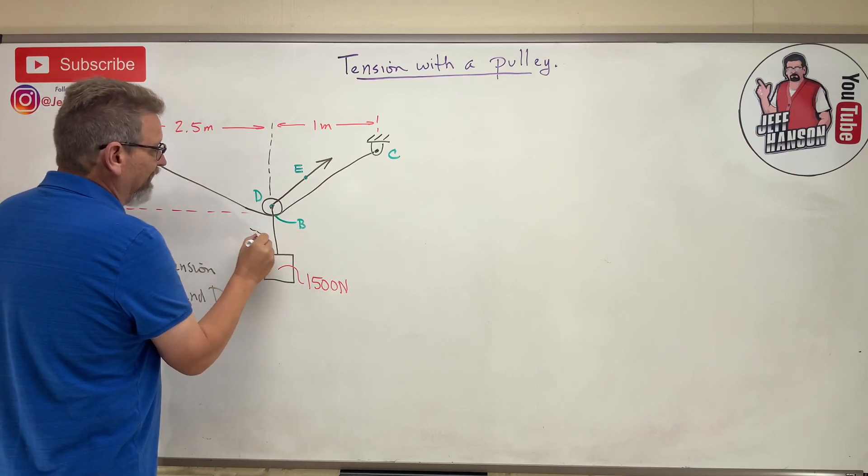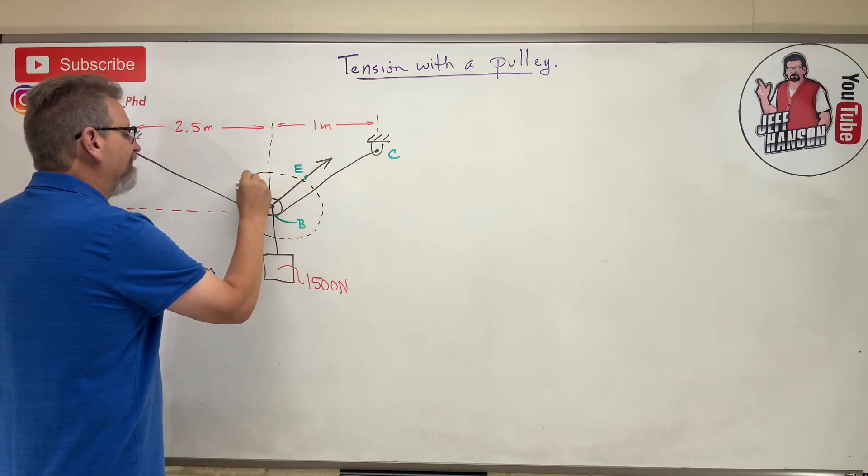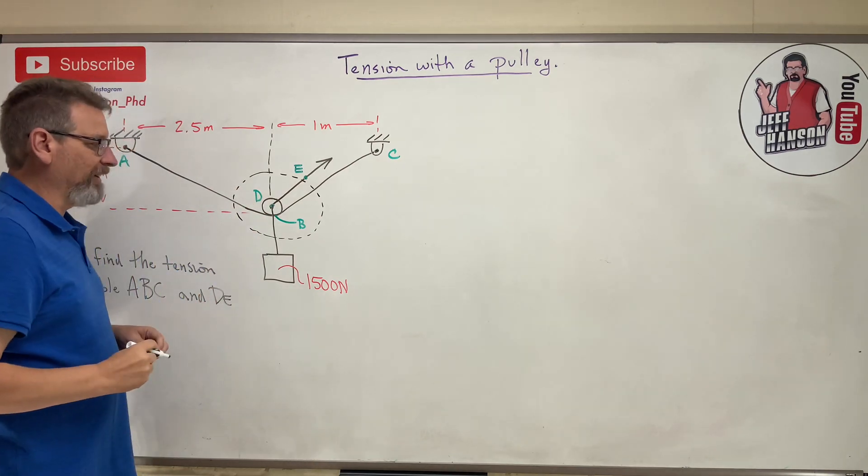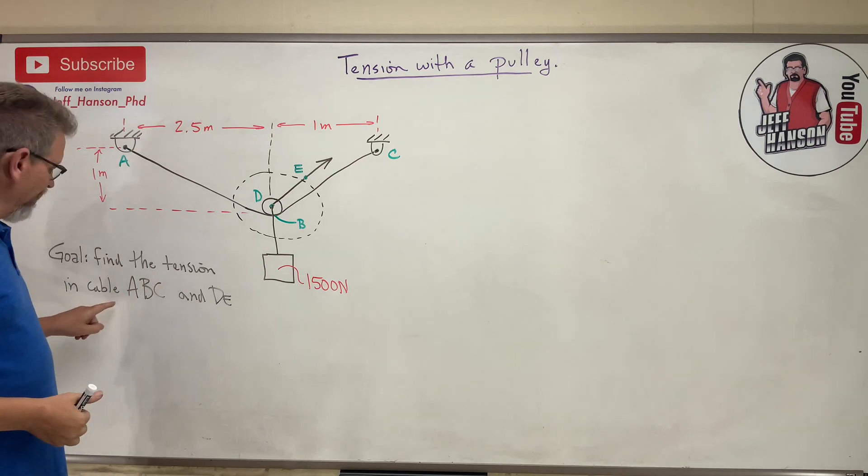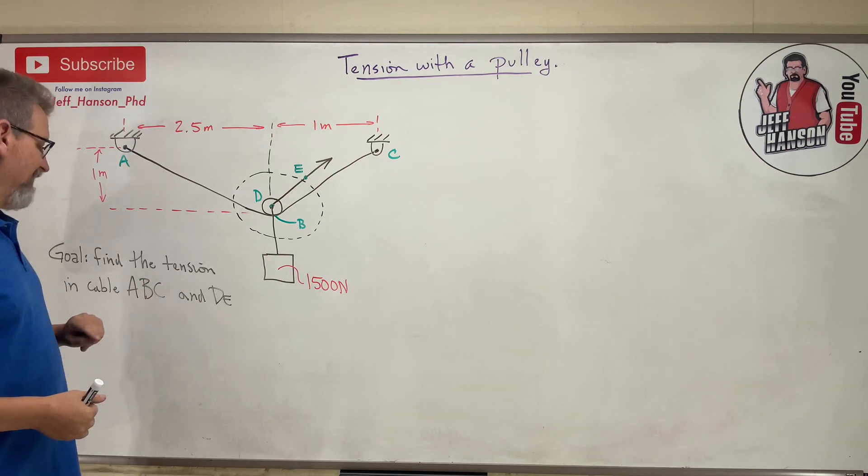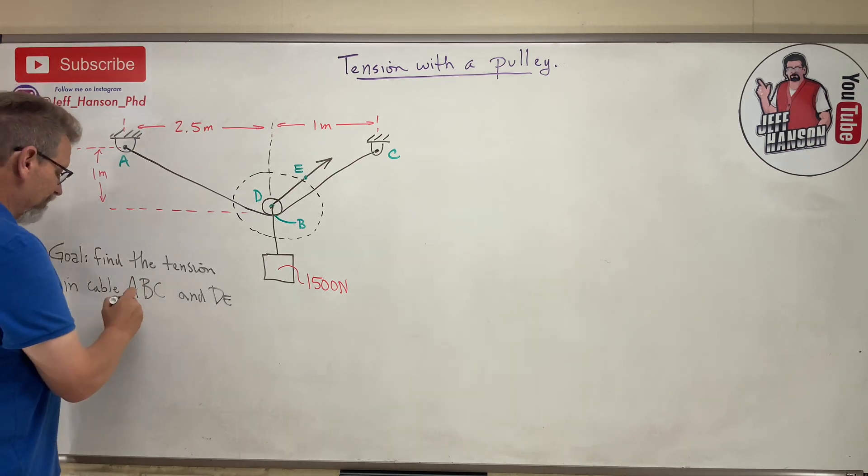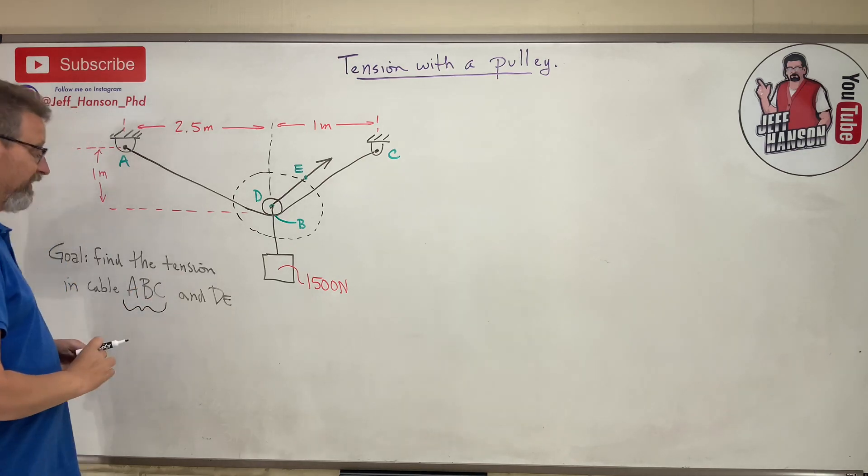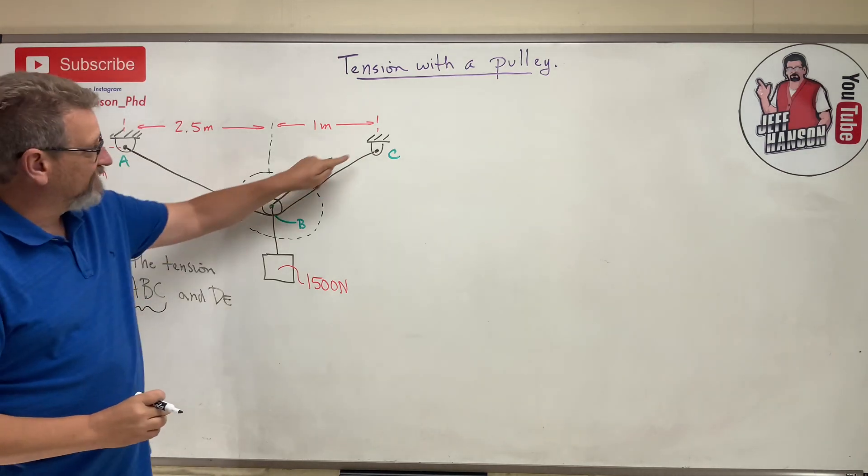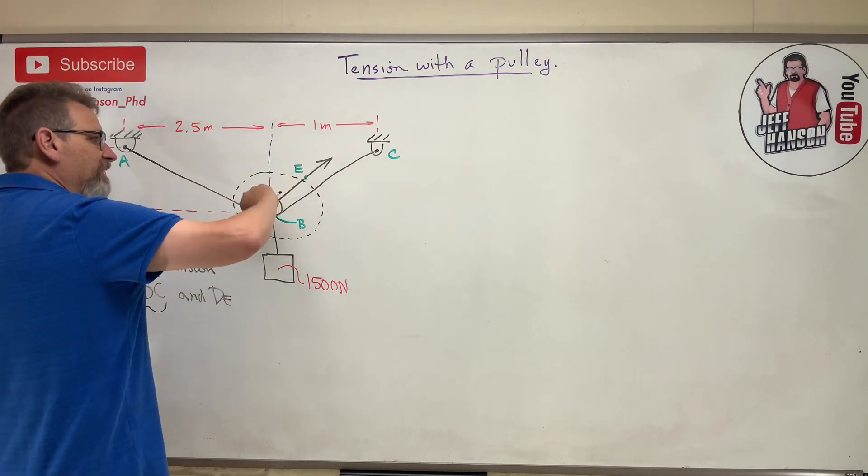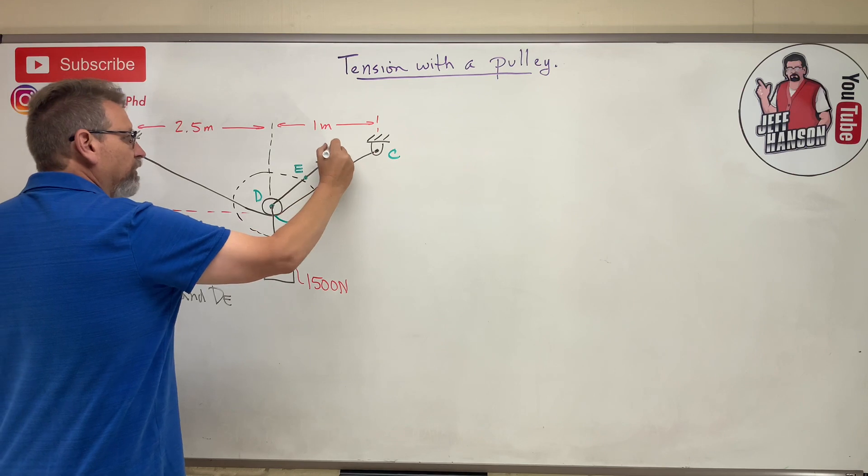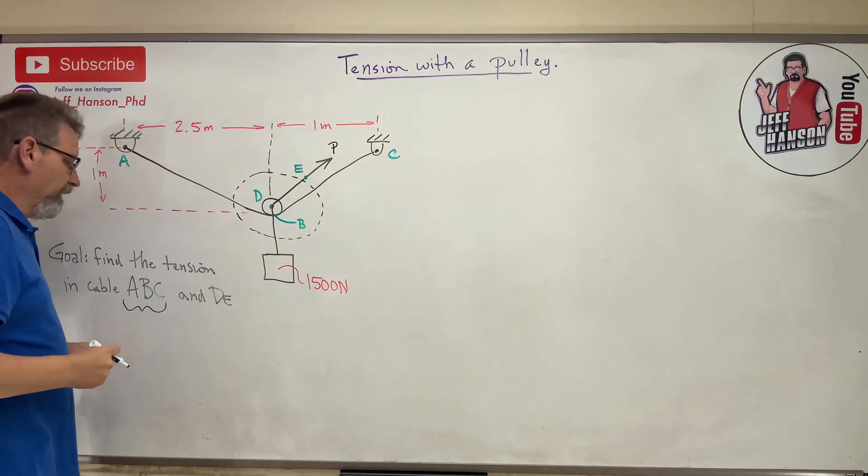I'm gonna look at that joint right there. They say find the tension in cable, and they give it to you right here: ABC. What does that mean? That means this whole business right there is all one cable. So ABC is one cable, and then DE is this little guy right here.